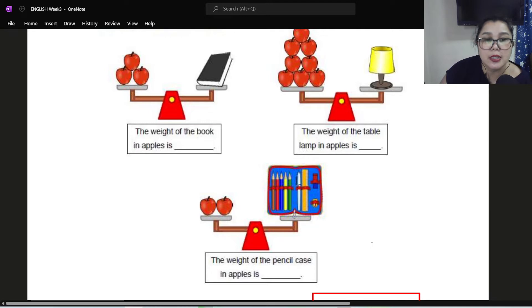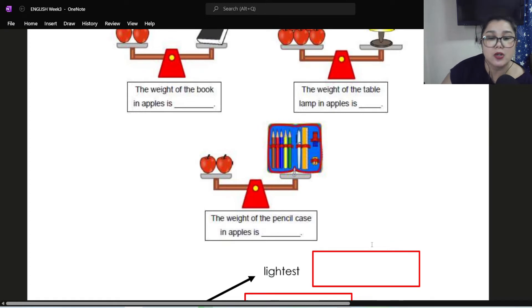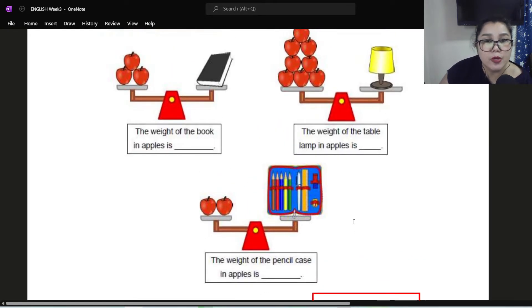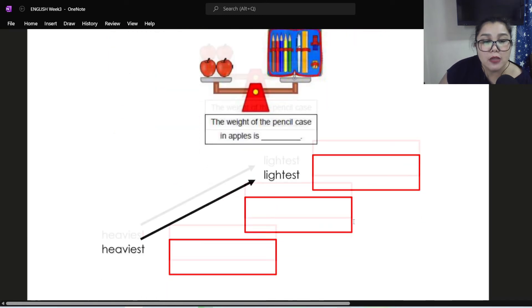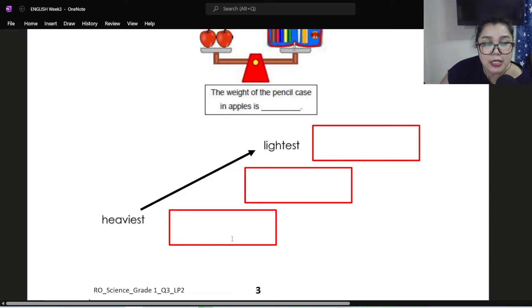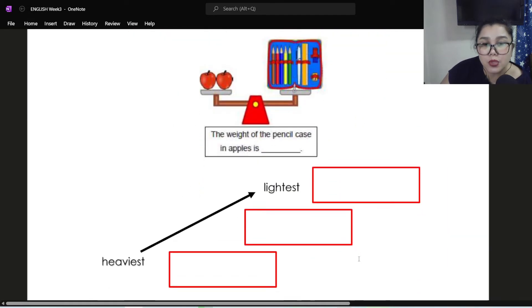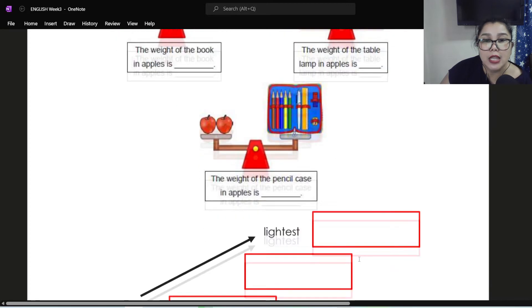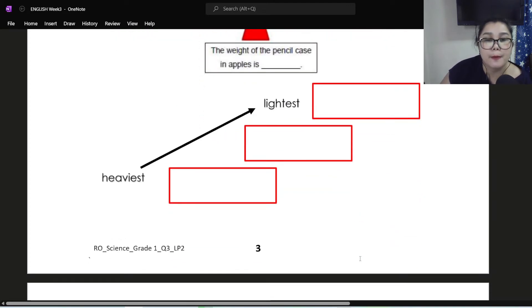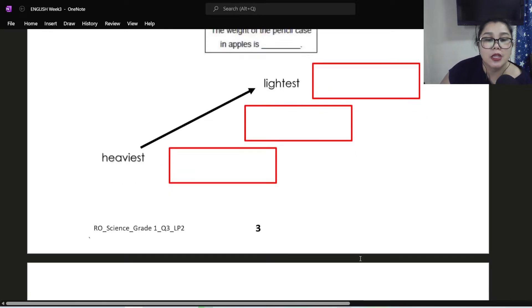So we have here three objects being compared. Book, table lamp, and pencil case. After you have identified the number of apples equivalent to its mass, you need to fill in these boxes. So starting from the heaviest, which is the heaviest? The object, not the number of apples, the object itself. Next, the next object, which is a bit lighter. And then, the lightest. So you need to choose among the three: book, pencil case, or table lamp. Not the number of apples.